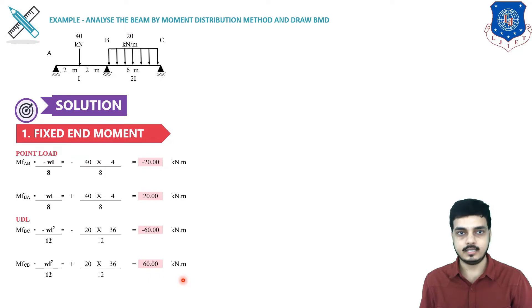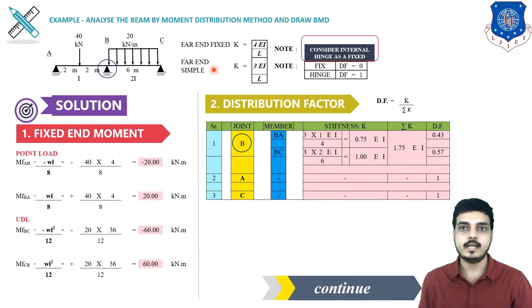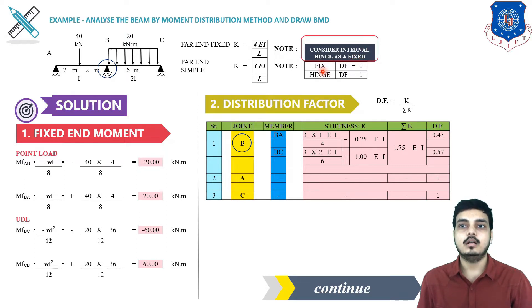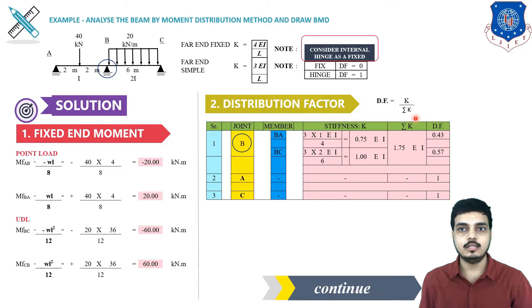Before starting step 2, let's recall the stiffness formulas from the previous session on MDM. If the far end is fixed, K = 4EI/L. If the far end is simple, K = 3EI/L. Also note that an internal hinge is considered as fixed. For external supports: if the external support is fixed, the distribution factor is 0; if it is a hinge support, the distribution factor is 1.